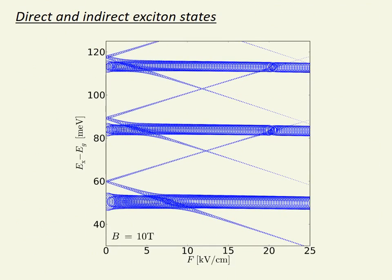Shown here as a function of electric field, with a magnetic field of 10 tesla. The circle areas are proportional to the oscillator strength, or brightness, of each state. We find bright direct and dark indirect exciton lines.